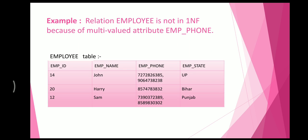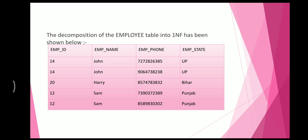Example: the relation 'Employee' is not in 1NF because of the multi-valued attribute 'Employee Phone.' In employee ID 14, there are two phone numbers, but there should be only one. Similarly, employee ID 12 also has two numbers. So we decompose the employee table by separating the numbers. After decomposition, employee ID 14 is written twice with the phone numbers separated, while employee name and employee state remain the same. This was the First Normal Form.